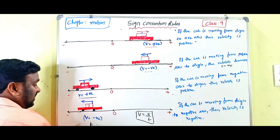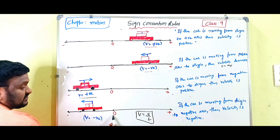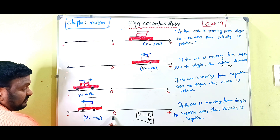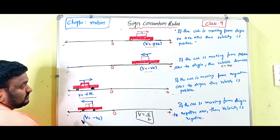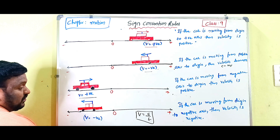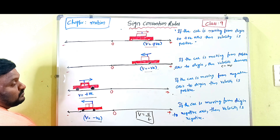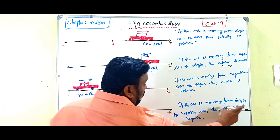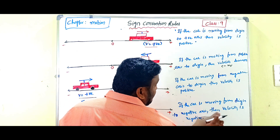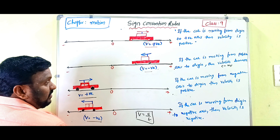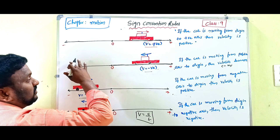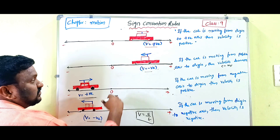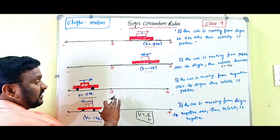The last case: the car is moving from the origin to the negative axis. When it moves along the negative axis, the displacement becomes negative again, so velocity is also negative. If the car is moving from origin to the negative axis, then the velocity is negative. So these are the sign convention rules for velocity — origin to positive: positive; positive to origin: negative; negative to origin: positive; origin to negative: negative.